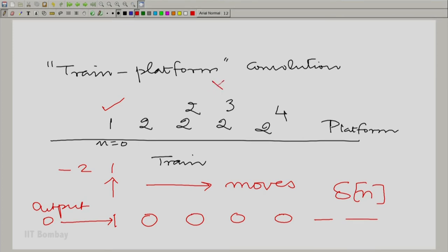And therefore, X of z is 1 by 1 minus 2 z inverse with |z| greater than 2.